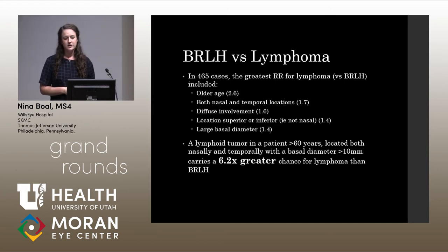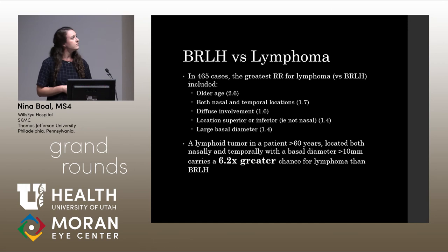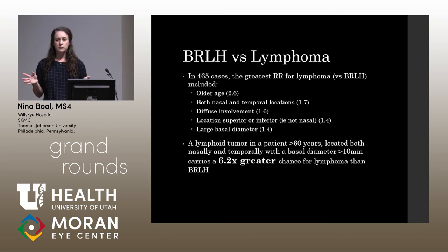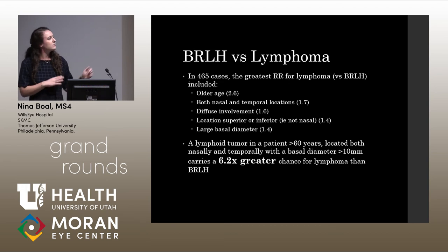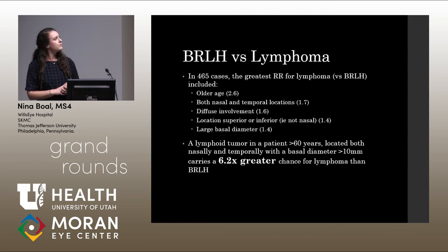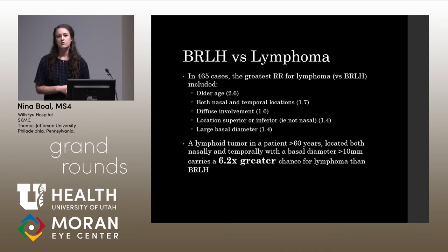For BRLH versus lymphoma, there were 465 total cases. The greatest relative risk factors for being lymphoma include older patient age (RR 2.6), tumor present both nasally and temporally — BRLH tends to be nasal only, so bilateral involvement suggests lymphoma — diffuse involvement, location superiorly and inferiorly along the tarsal conjunctiva, and large basal diameter. Combined: a lymphoid tumor in a patient older than 60, located both nasally and temporally with a basal diameter greater than 10 millimeters, carries a 6.2 times greater chance of being lymphoma over BRLH.